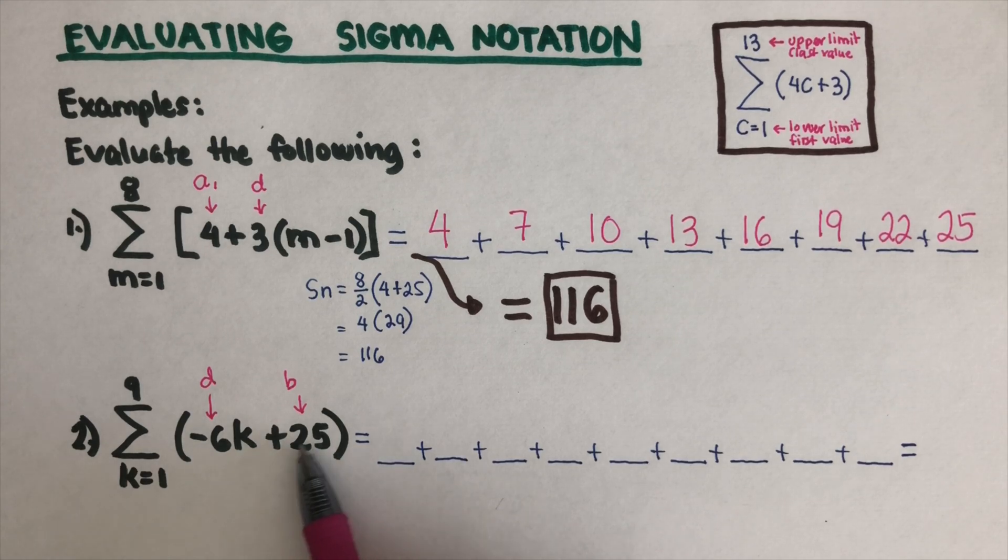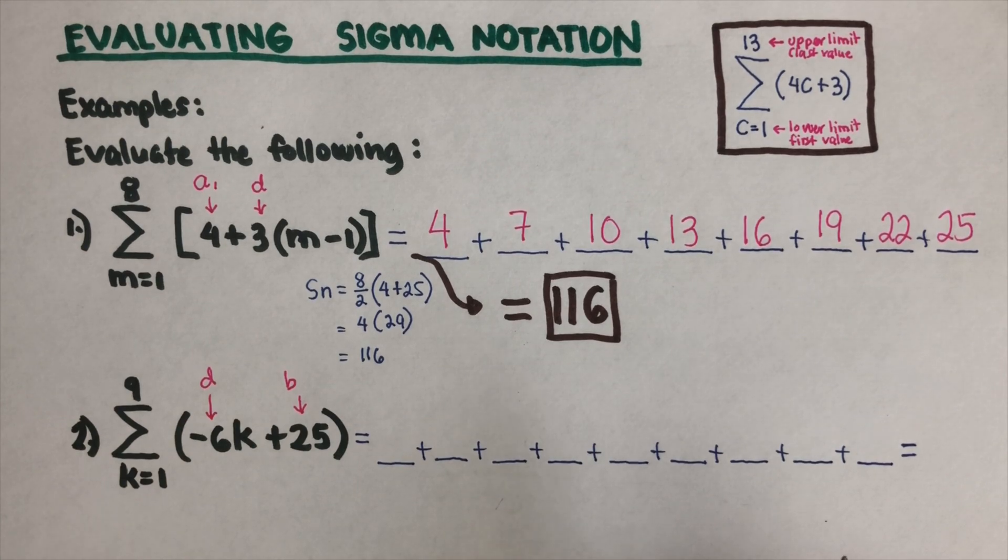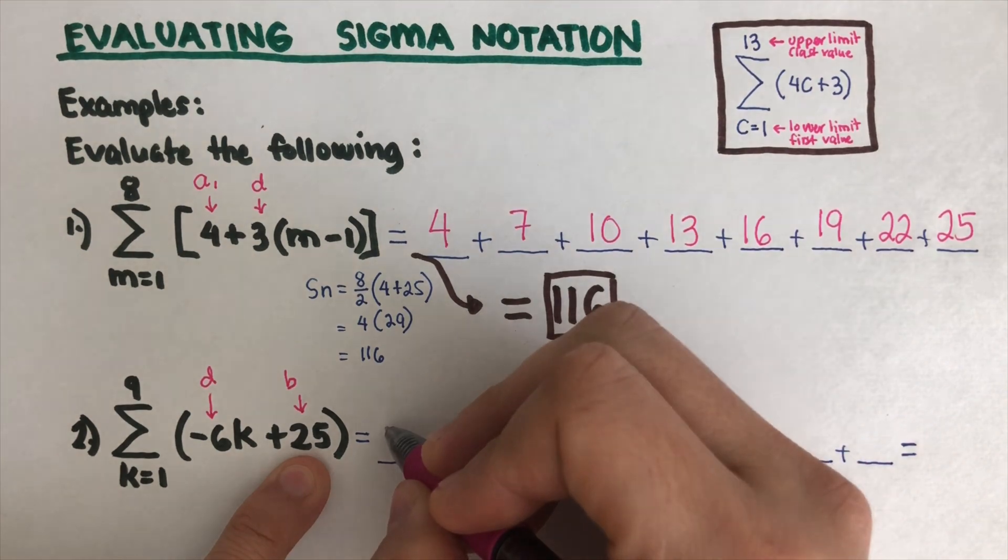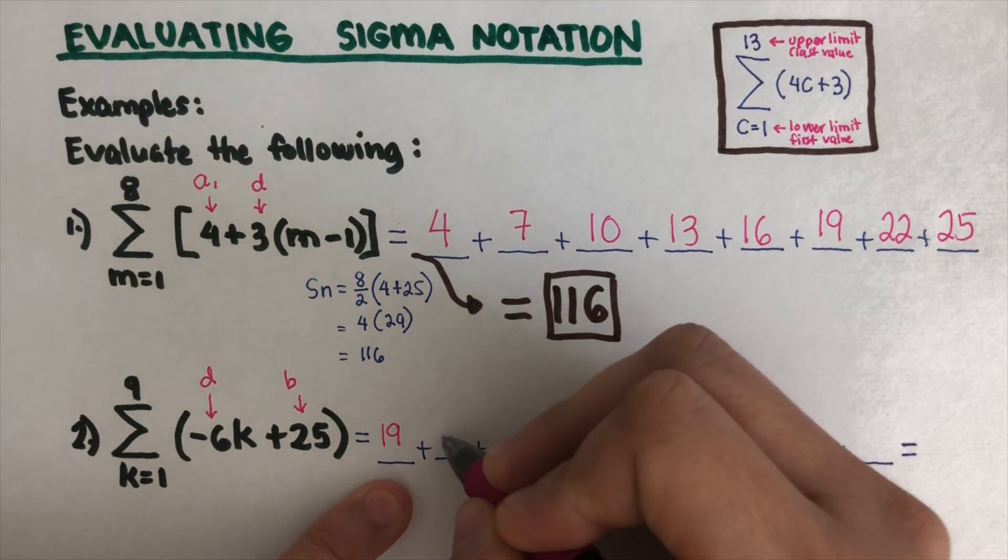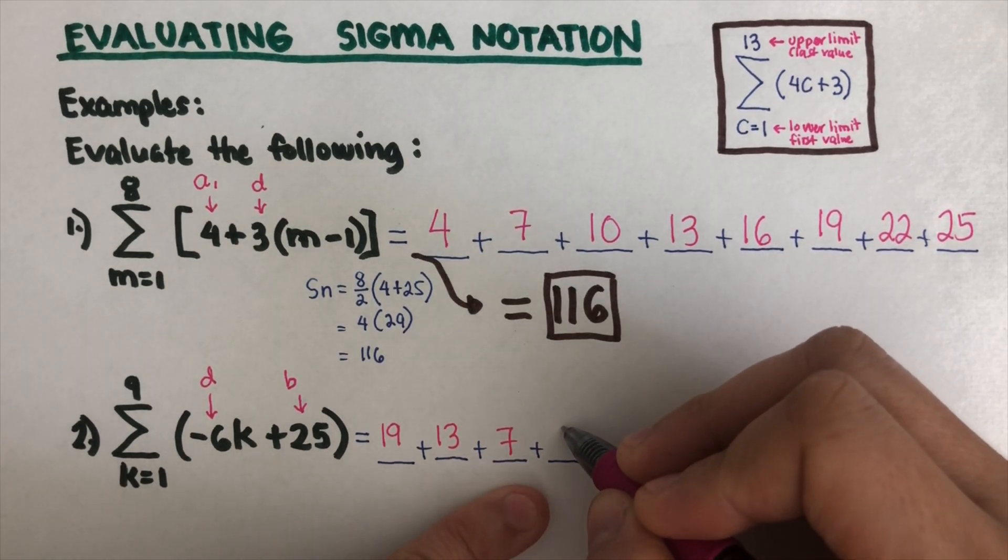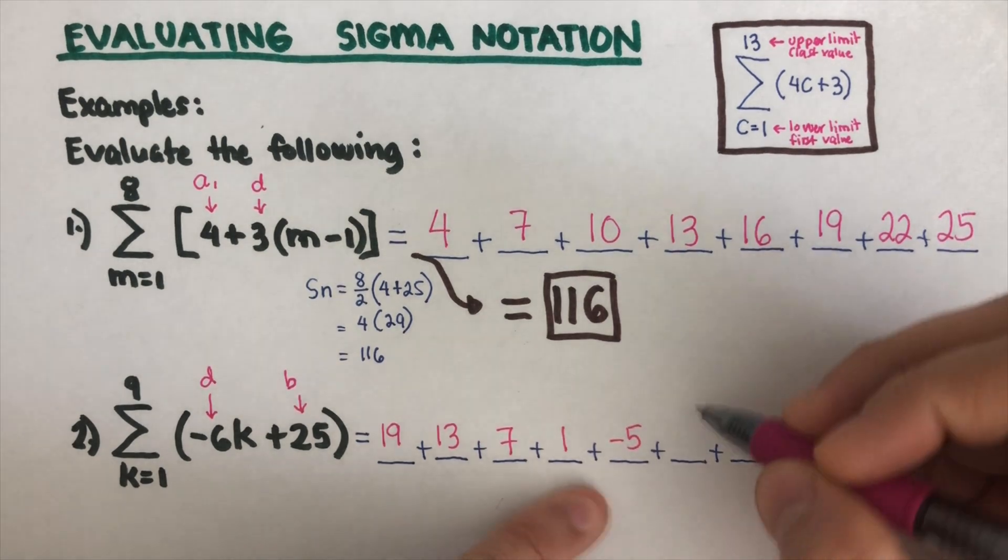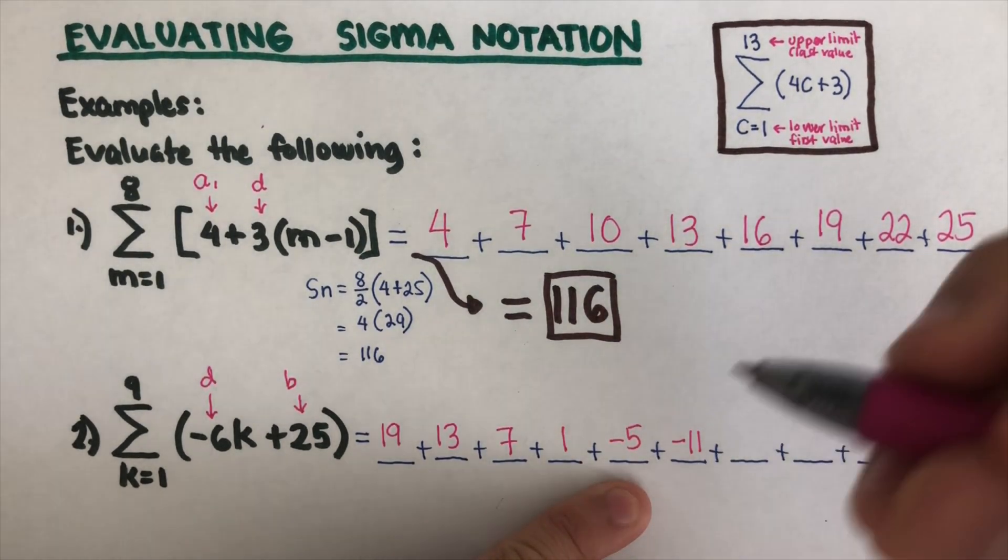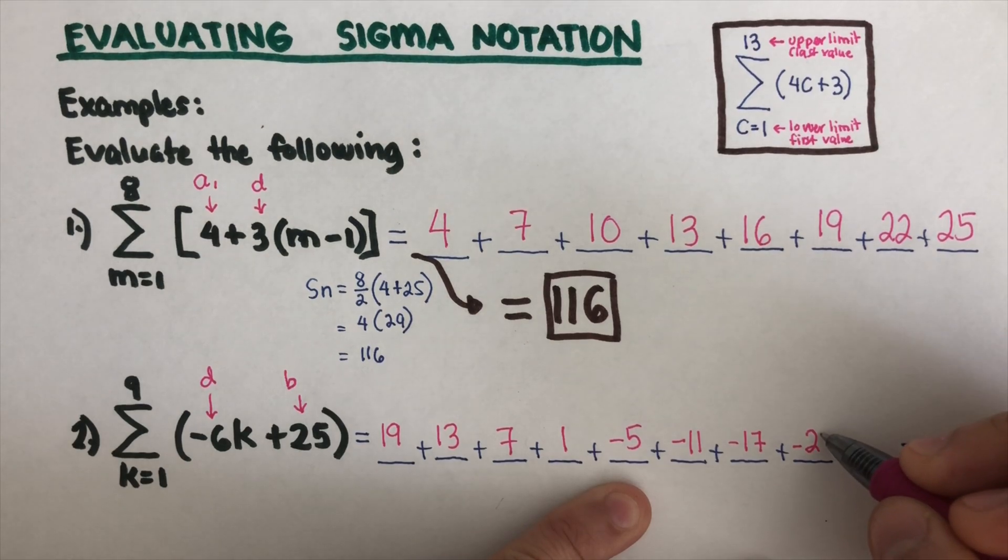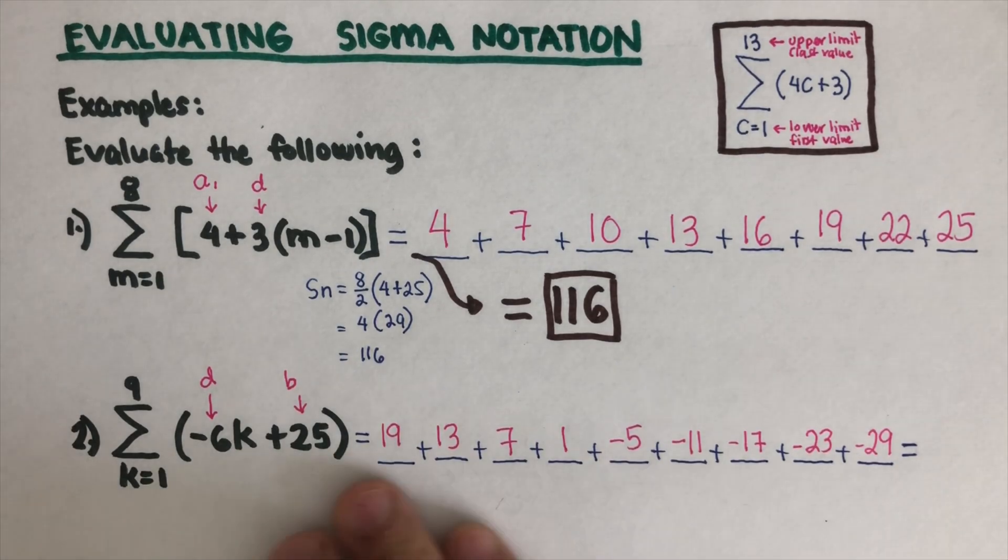That means the first one that we write here is after this one, and since it goes down by negative 6, so 25 minus 6 is 19, 19 minus 6 is 13, 13 minus 6 is 7, 7 minus 6 is 1, 1 minus 6 is negative 5, negative 11. We're subtracting 6 each time, so this would be negative 17, negative 23, and then negative 29.